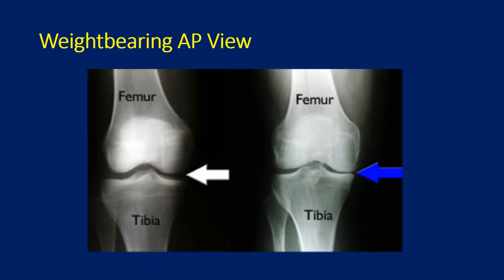Perhaps the most important view is the weight-bearing AP view. This is a view where the patient is standing while an x-ray is taken. You can see here on the left the knee with the white arrow shows an adequate joint space of the medial compartment as well as the lateral compartment. The same x-ray taken with the patient standing up on the right shows that the space narrows, and thus the diagnosis of osteoarthritis, nearly bone-on-bone, would not have been detected in a non-weight-bearing view.